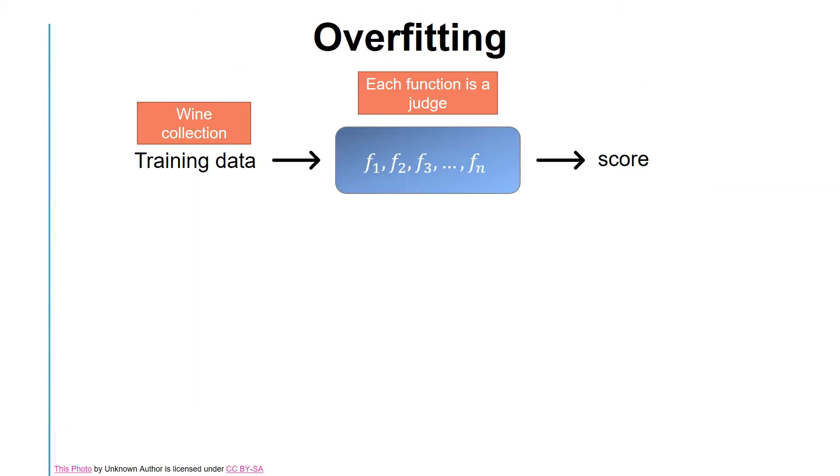To better understand the concept of overfitting in the wine judging scenario, let's consider the following questions. What is the probability that there is a judge that performs well by chance? What does this probability depend on?